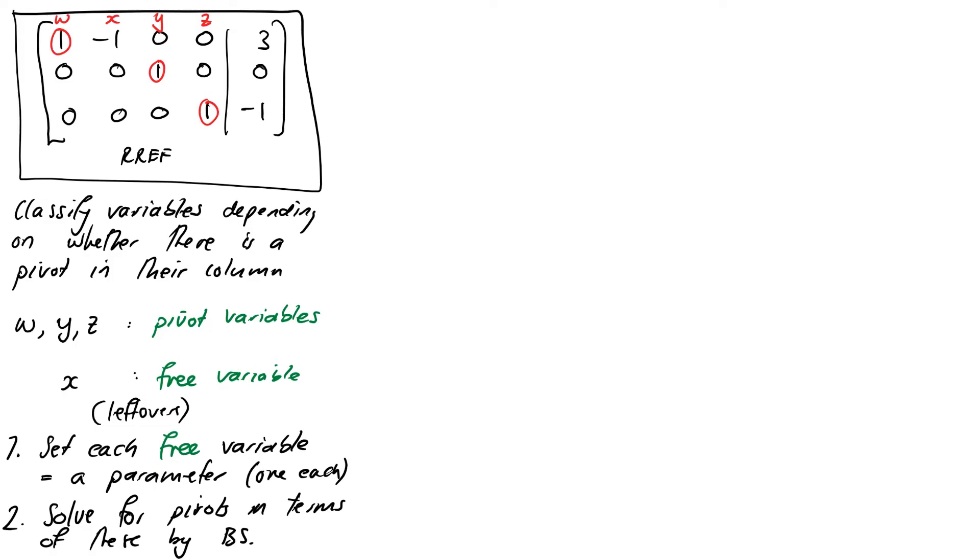And we solve for the pivot variables in terms of these by back substitution. So, for this example, our free variable, we've only got 1, is X. So we'll start by setting it to a parameter T. If we had a second one, we need to give that a second parameter like S or something as well. So we're going to write let X equal T.